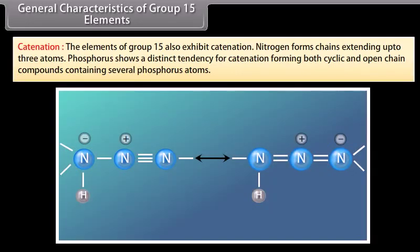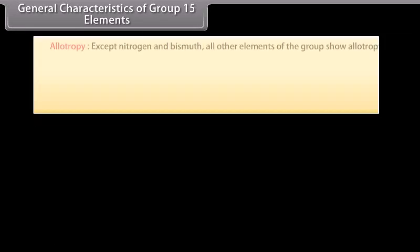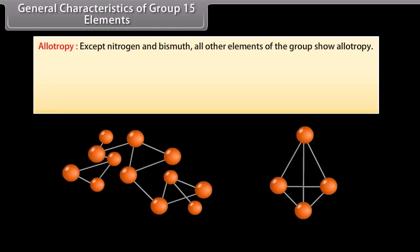General characteristics: Catenation — the elements of group 15 exhibit catenation. Nitrogen forms chains extending up to 3 atoms. Phosphorus shows a distinct tendency for catenation, forming both cyclic and open chain compounds containing several phosphorus atoms. Allotropy — except nitrogen and bismuth, all other elements of the group show allotropy. Phosphorus exists as white, red and black phosphorus.